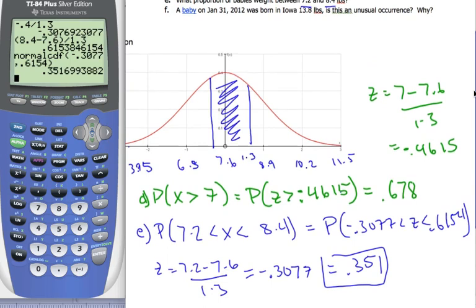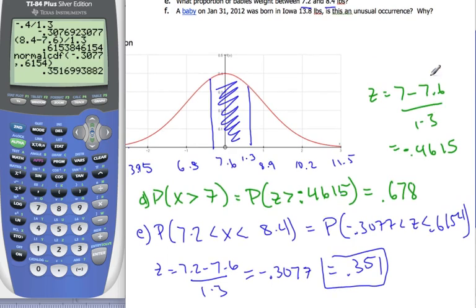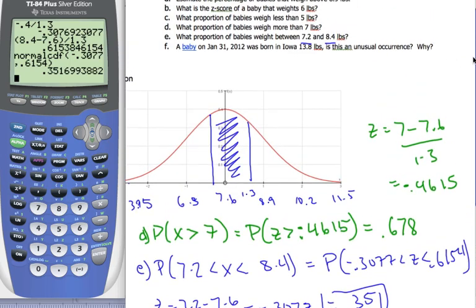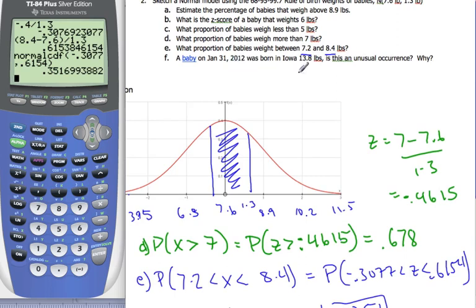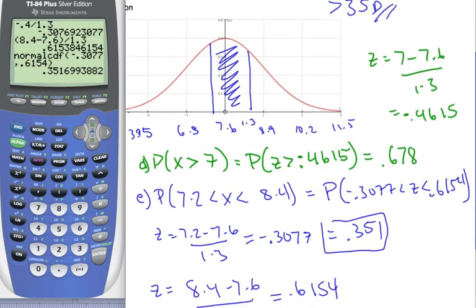Last question. F. A baby born January 31, 2012 in Iowa at 13.8 pounds. Is this an unusual occurrence? Well, if it is more than 3 standard deviations away, you can definitely say it is an unusual occurrence. So, let's find out where this actual baby lies.